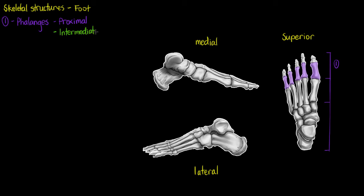So we've got a proximal phalange, intermediate phalange, and if we have a look here we don't have an intermediate phalange on our big toe, exactly the same as on our hand. We didn't have an intermediate phalange on our thumb. The last segment we will have is our distal phalanges which I've highlighted in red here.